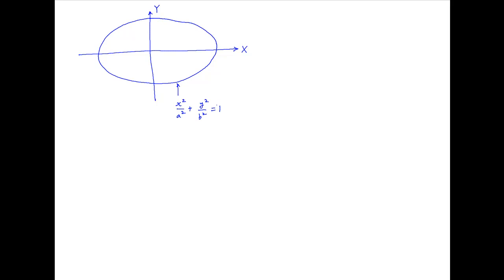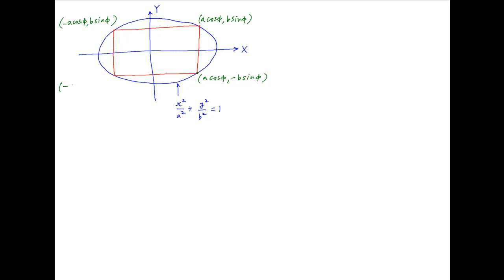We need to find the area of the largest rectangle that can be drawn within this ellipse. Let's assume that one of the corners of the rectangle lying on the ellipse in the first quadrant has the coordinates (a cos φ, b sin φ). Therefore, the coordinates of the other corners are (a cos φ, -b sin φ), (-a cos φ, b sin φ), and (-a cos φ, -b sin φ).